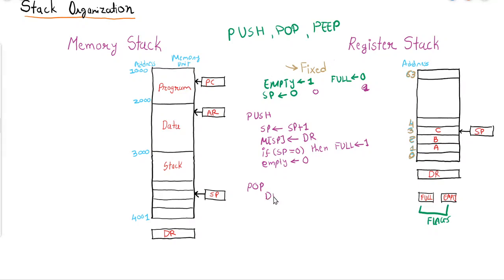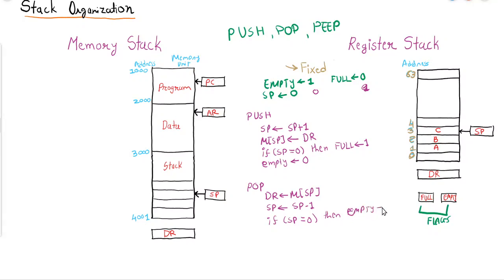For the pop operation: first DR = M[SP], retrieving the element from the stack. Then SP is decremented — SP = SP - 1. Next, we check if SP equals 0; if so, empty is set to 1. Then full is set to 0. For example, if the stack is full and we pop one element, there will be a vacancy for a new element, so full is set to 0.